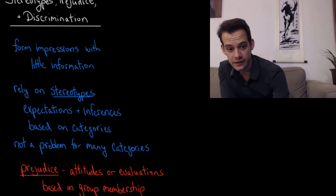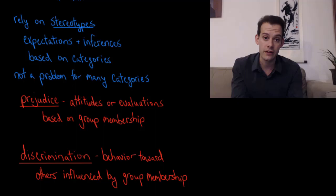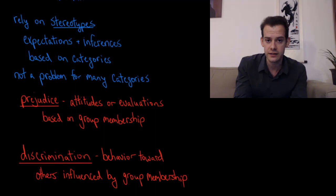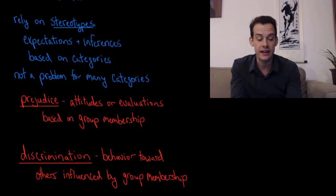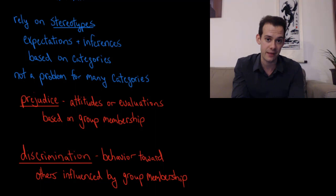This can lead us to prejudice. Prejudice refers to where we form attitudes or evaluate people based on their group membership. So if I have a stereotype that students from a particular school are arrogant and then I meet someone who went to that school and I decide I don't like him because of that, that's an example of prejudice — I'm evaluating him based on his group, not his individual behavior. I might also engage in discrimination, where my behavior towards this person is influenced by his group membership. For instance, deciding not to hire him because of the school he attended would be an example of discrimination.